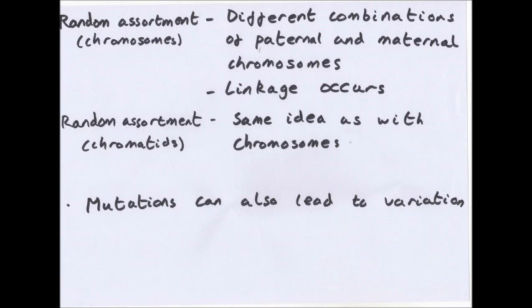Random assortment of chromatids is the exact same idea as random assortment of chromosomes. You've got different options across the equator. Mutations can also lead to variation. If you watch a cellular control video, you'll see how they can lead to different base sequences. Also, fertilization can lead to genetic variation. If you have a million sperm with one egg, there's a million different combinations of DNA that could go into the egg.